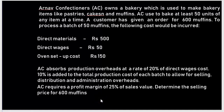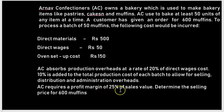Now we need to add the profit margin to arrive at the selling price. AC requires a profit margin of 25% on sales value. To convert: if selling price is 100 and profit is 25, then cost is 75. So 25 as a percentage of 75 is 25/75, which equals one-third or 33.33%. This means profit on cost is 33.33%.